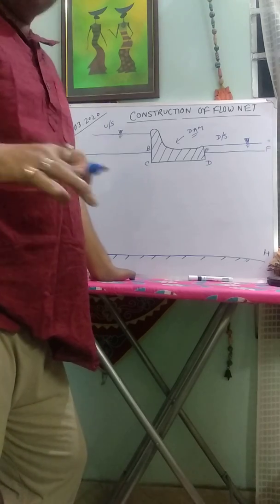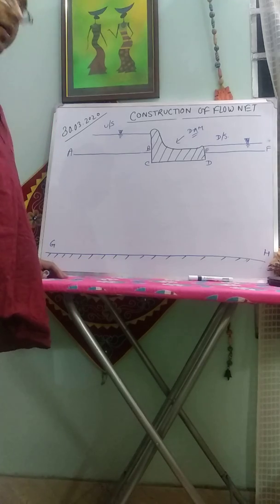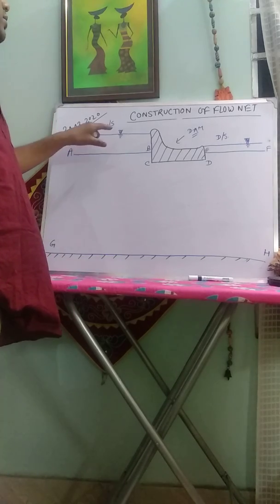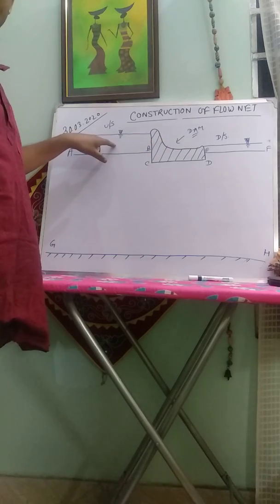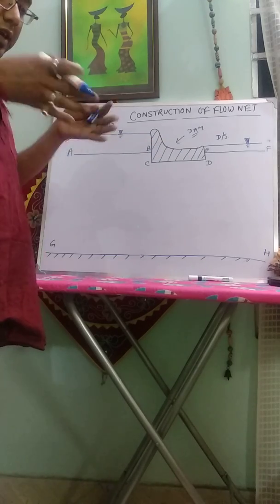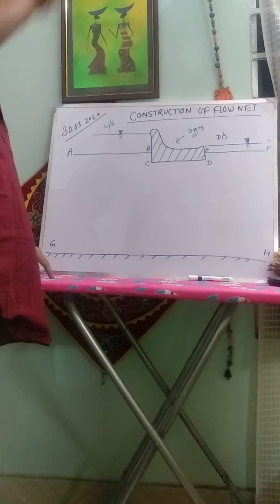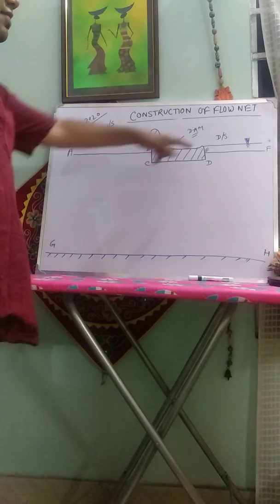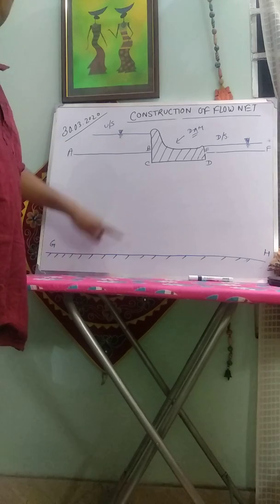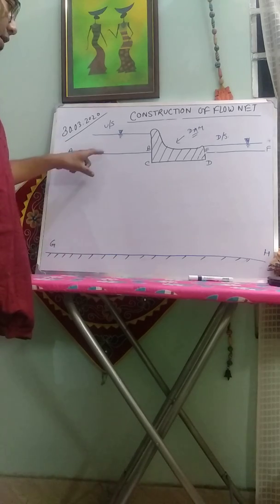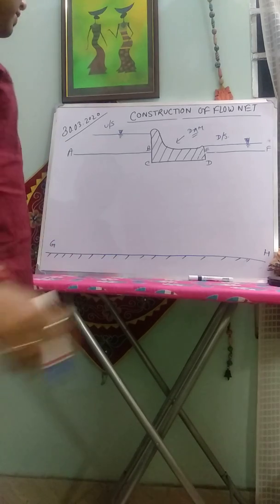This is the upstream side in the direction of the river, and this is the downstream side. And this is the soil strata - the thickness of the soil.